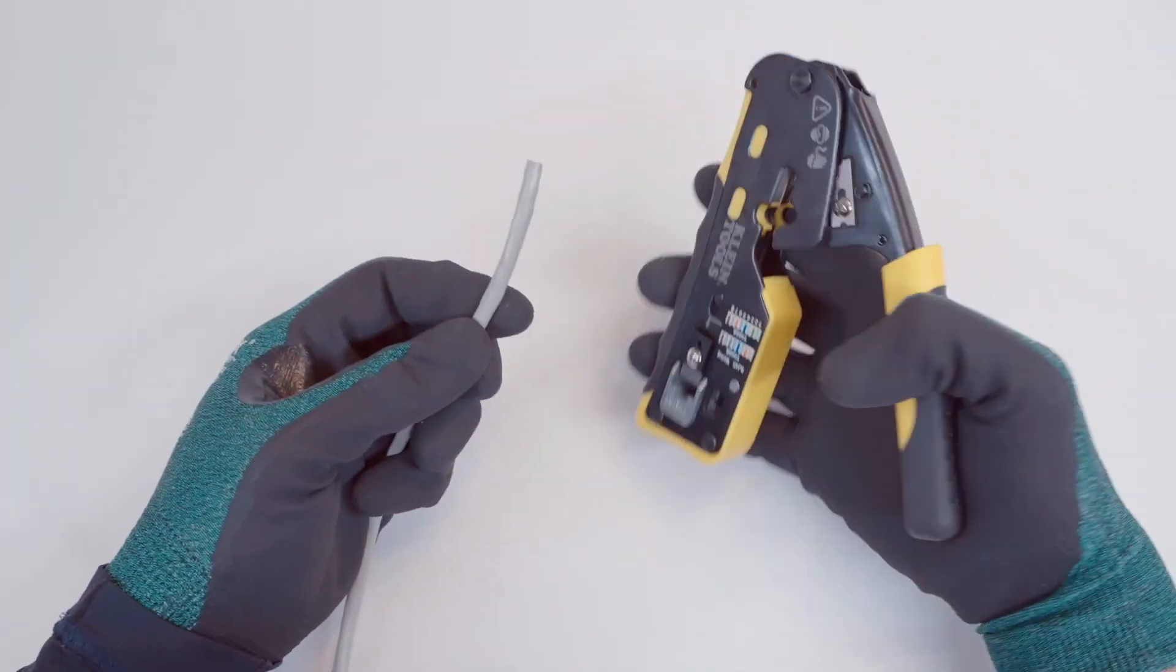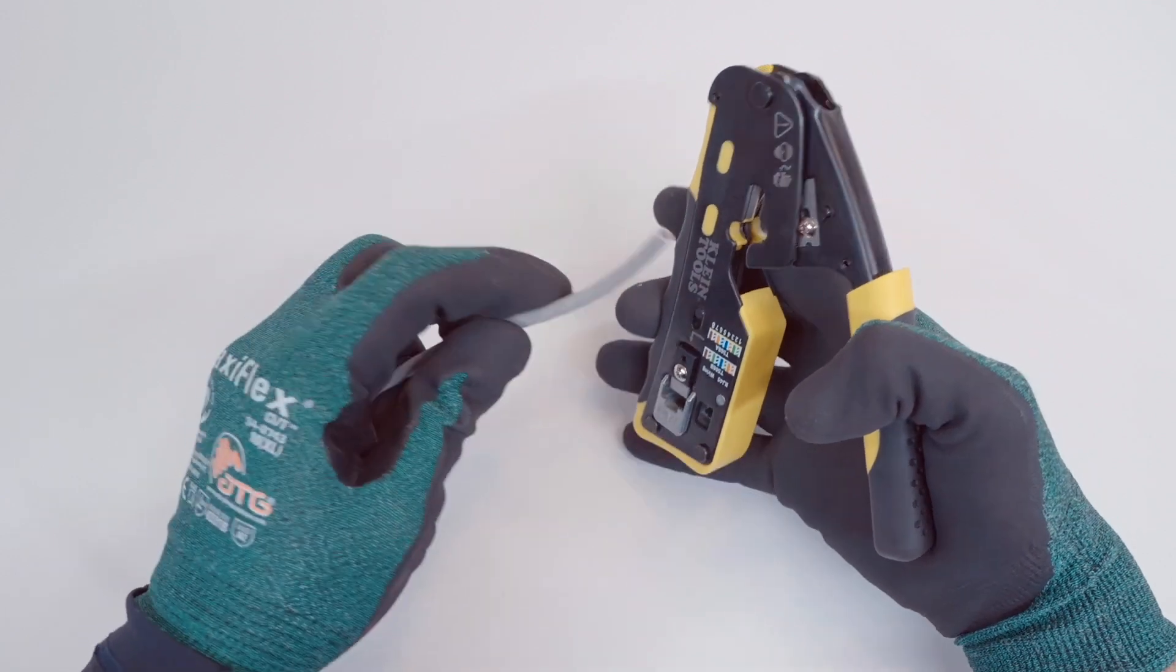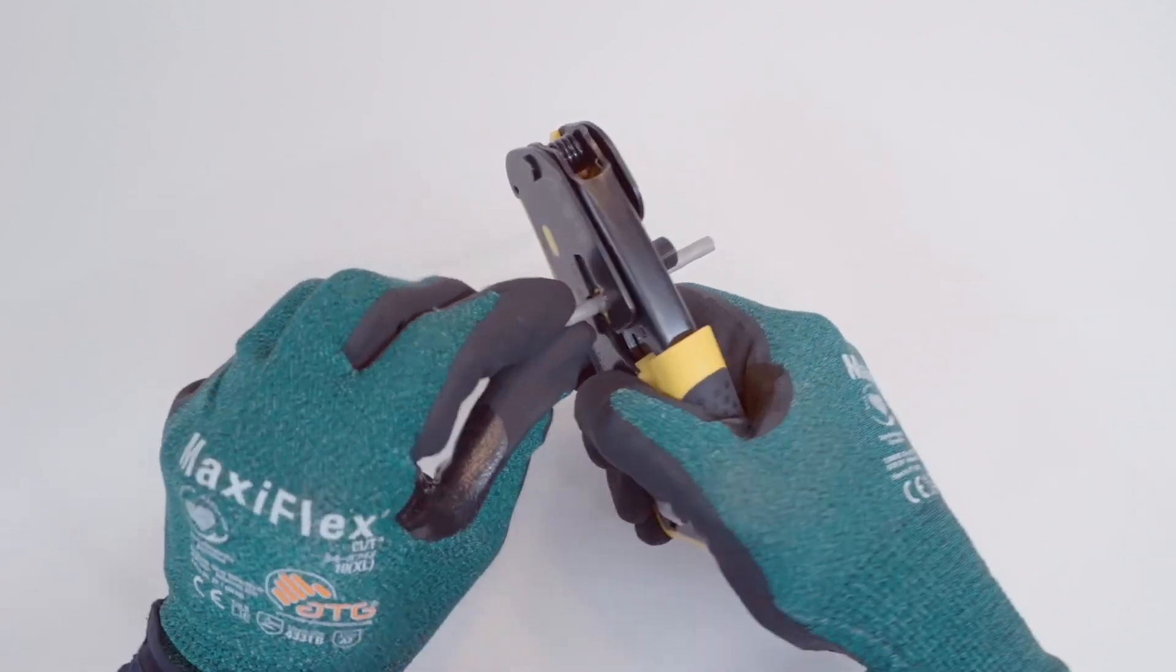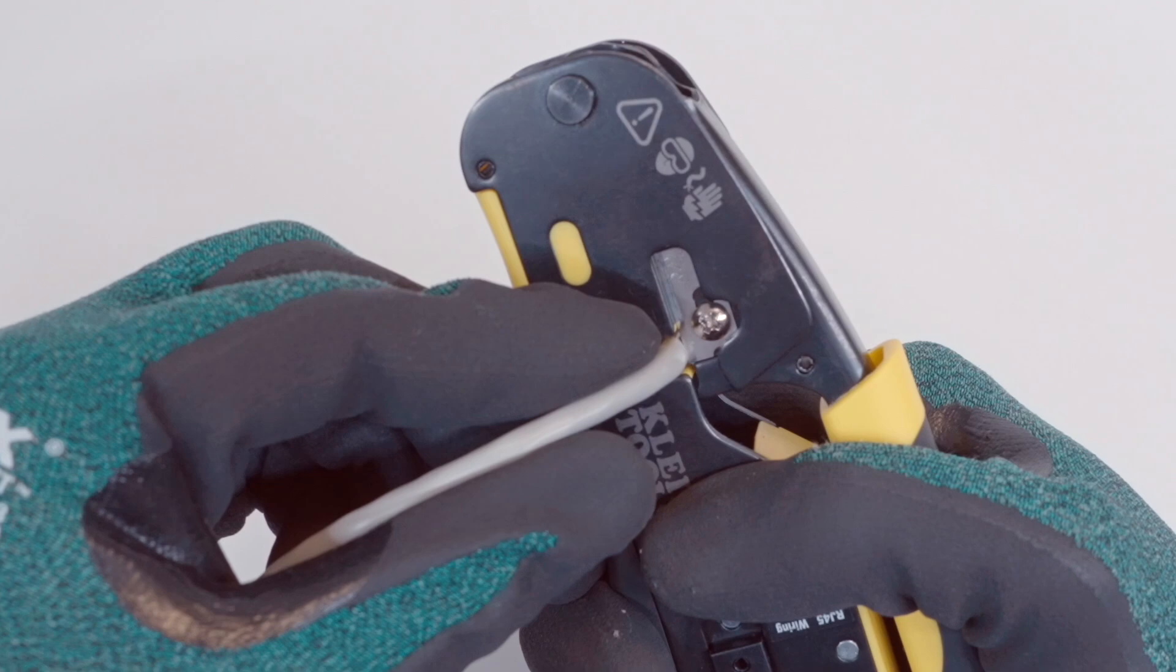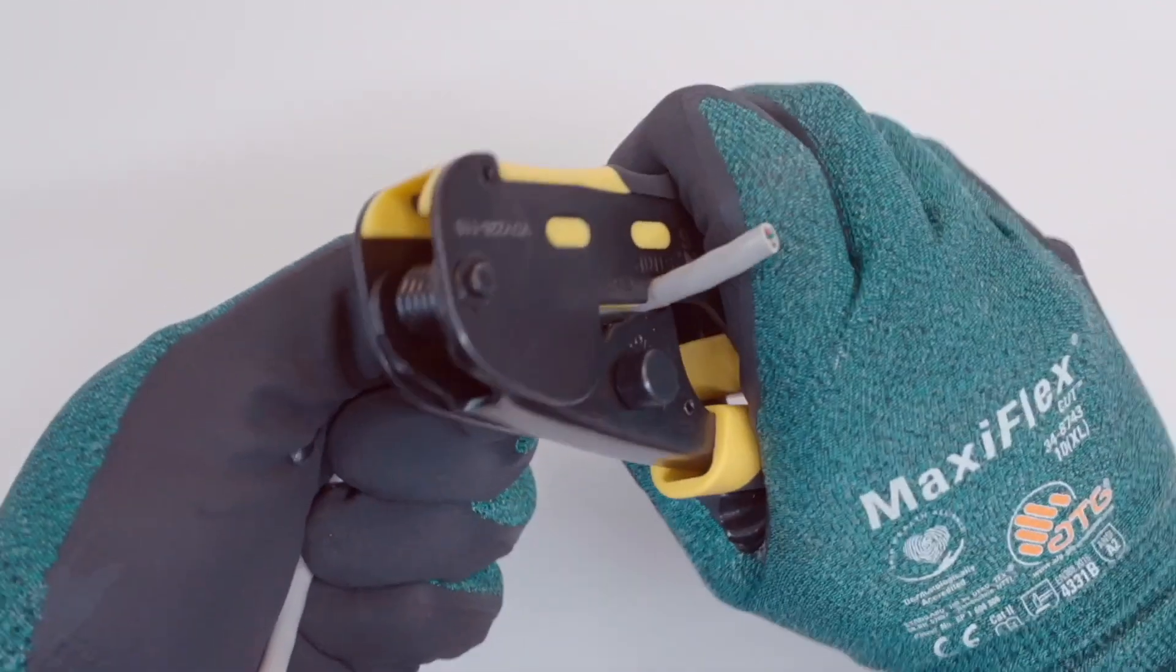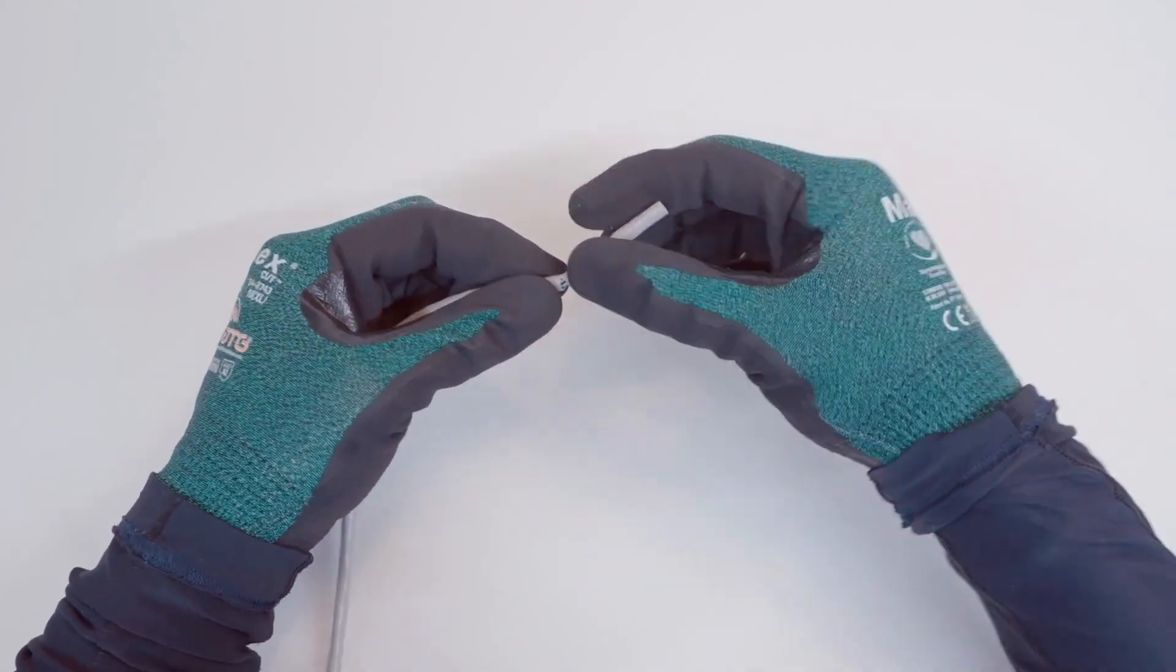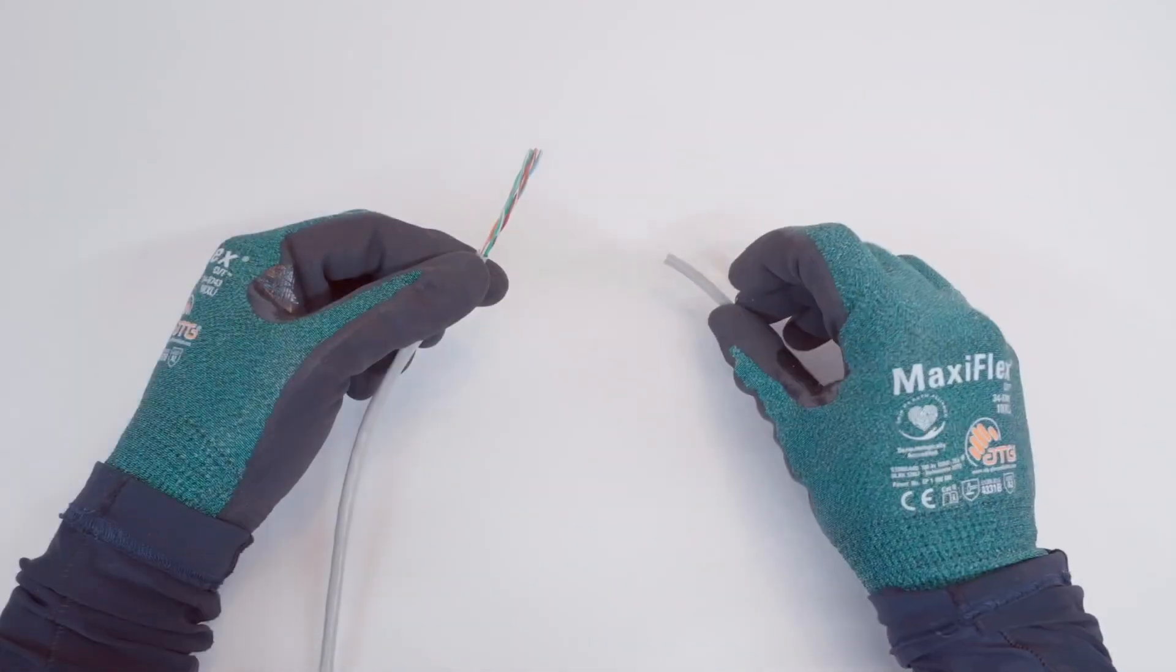The first step is to remove the outer jacket to expose the wiring underneath. Plan to remove at least half a finger's worth in length of the outer jacket. Insert the cable into the slot on the crimper labeled strip and squeeze the handles. Take note of the proximity of the blade to the outer jacket. Spin the crimper around the cable to score the jacket. Lightly bend or twist the jacket if necessary to finish cutting through the score. Pull away the loose end of the jacket and set it aside.